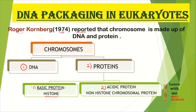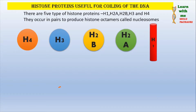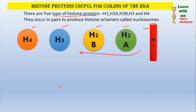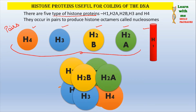These proteins are of two types: basic proteins, which we call histone proteins, and the second type is acidic proteins, which are called non-histone chromosomal proteins. In eukaryotes, 5 types of histone proteins are seen. These are H1, H2A, H2B, H3, and H4. Among these, H2A, H2B, H3, and H4 are present in pairs.